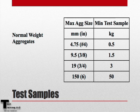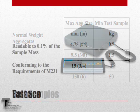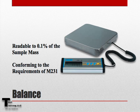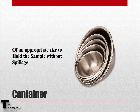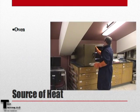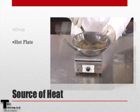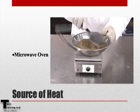The sample size for this procedure will vary based on the nominal maximum aggregate size. Please refer to Table 1 for the sample sizes of normal weight aggregates. To perform this test, we will need a scale readable to 0.1% of the sample mass, a container of sufficient size to hold the sample, and a source of heat such as an oven, hot plate, or microwave.